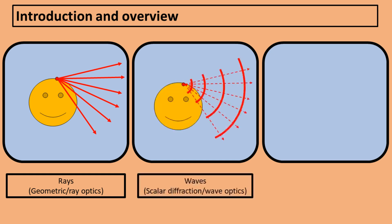In the more accurate wave model, each object point emits spherical waves, and the rays correspond to the directions that are perpendicular to the wave fronts.